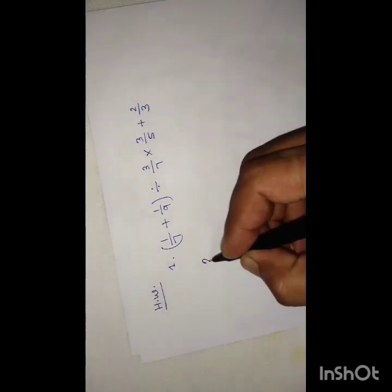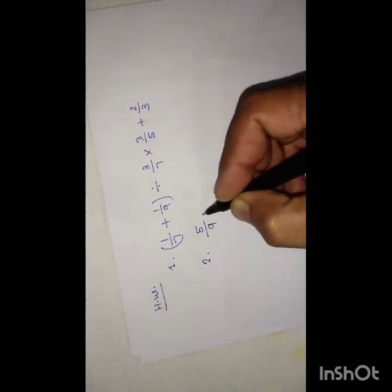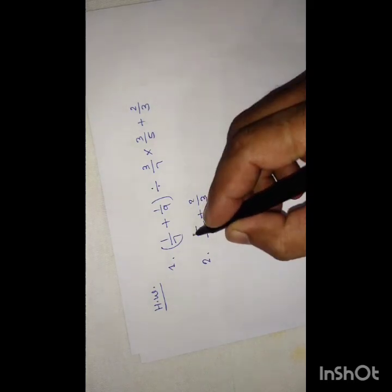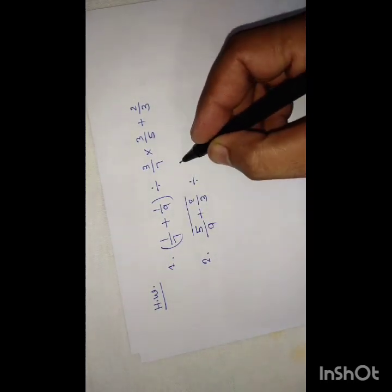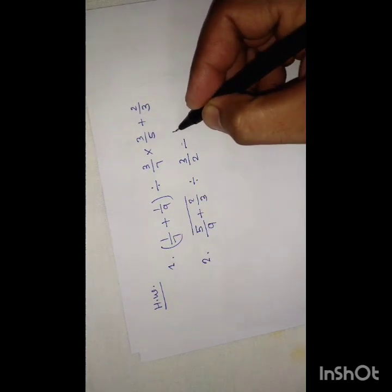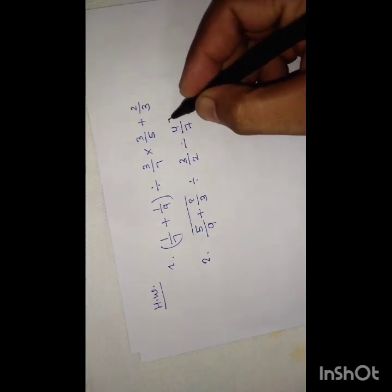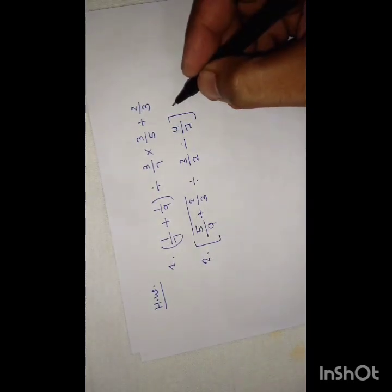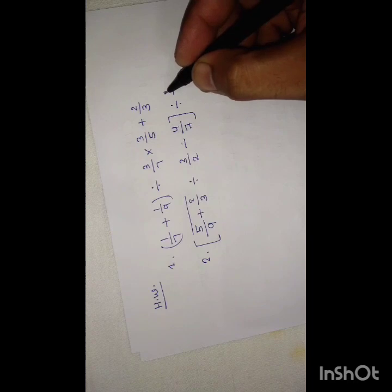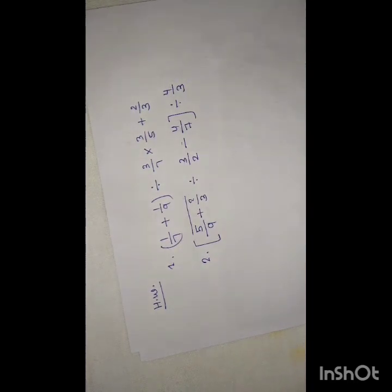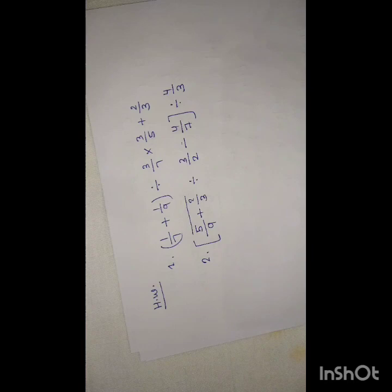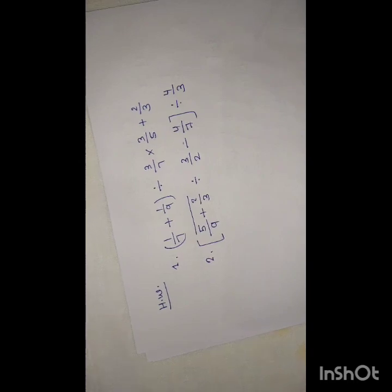The next question is: 5 upon 9 plus 2 upon 3, bar line, divided by 3 by 2 minus 4 by 7, divided by 1 upon 4 upon 3. Solve these questions and share your answers in the comments. In the next class we will cover more topics related to your board exams and competitive exams. We stop this class here — see you in the next class, good luck!